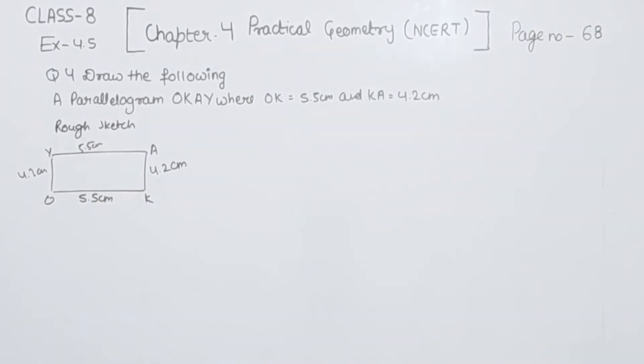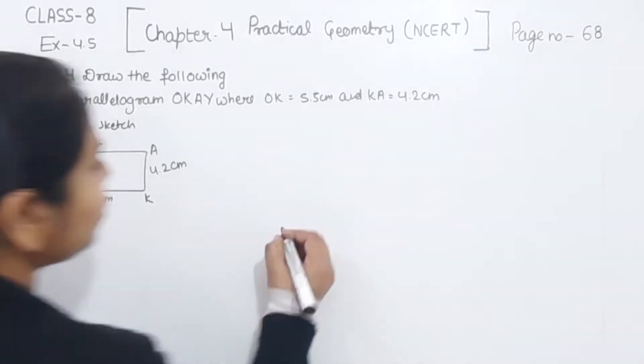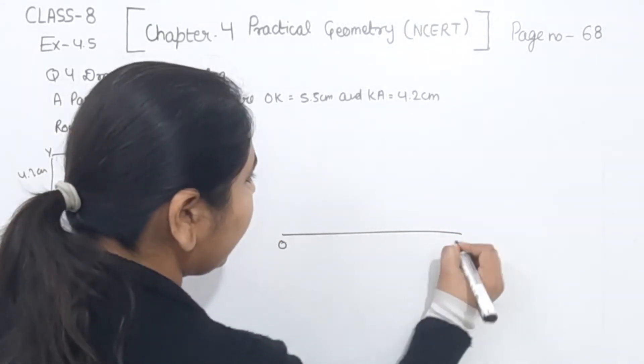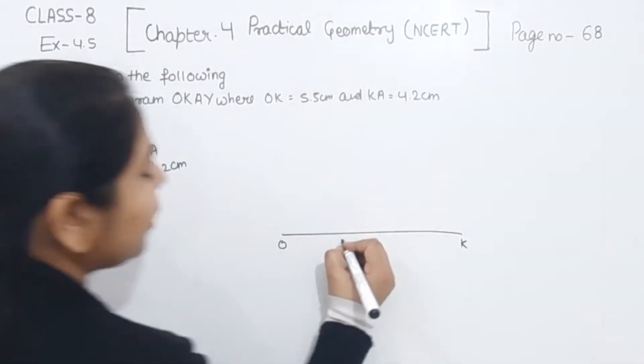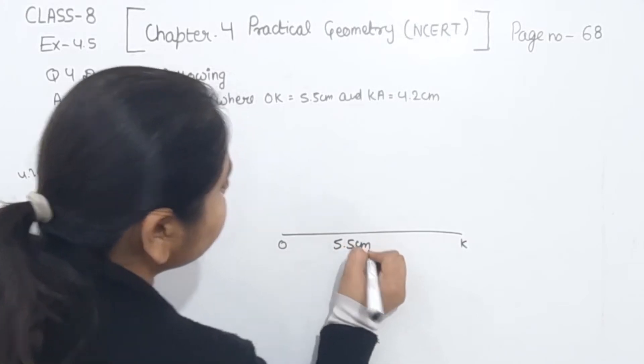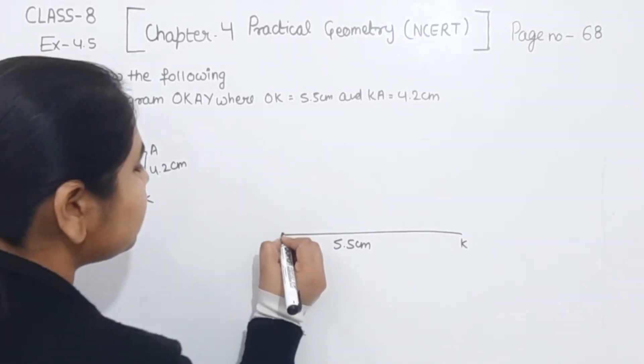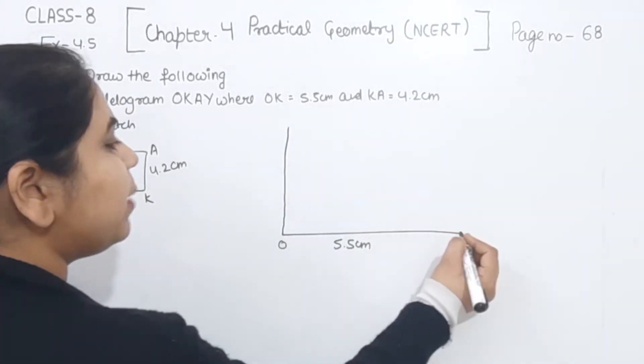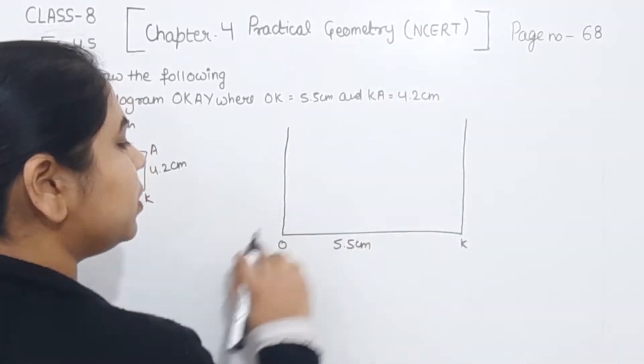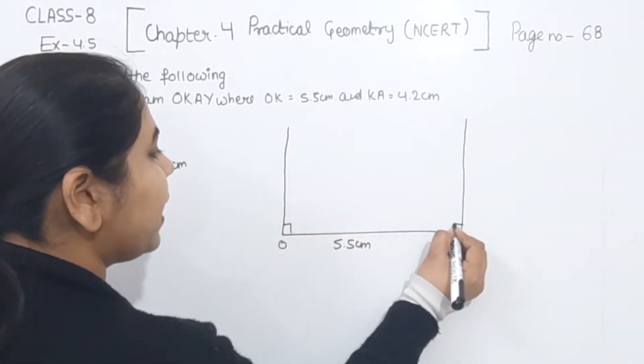Now we are going to draw the parallelogram. For that, first of all, we are going to draw the base OK as 5.5 cm. Now we are going to draw the angle of 90 degree at the point K and O, both of them. So we can draw this with the help of compass and D both. So this is the angle of 90 degree.